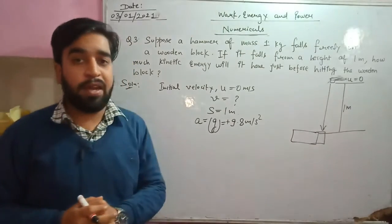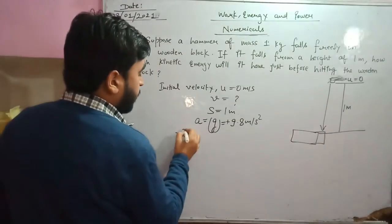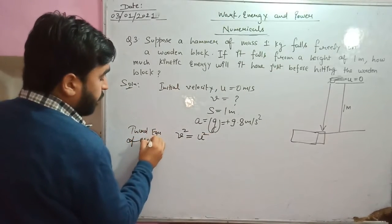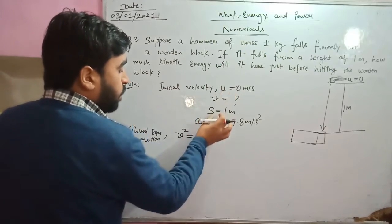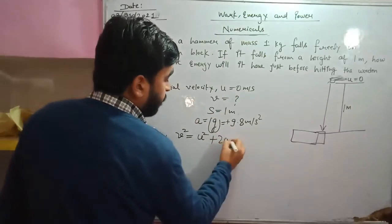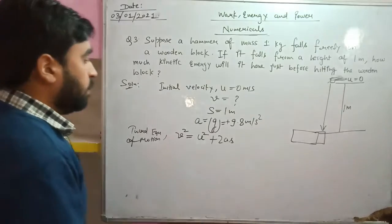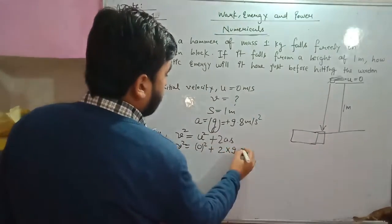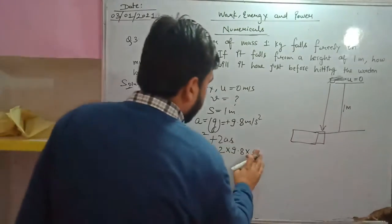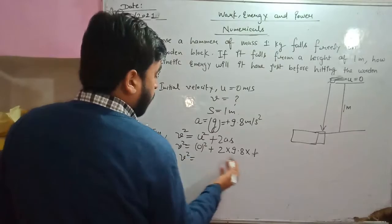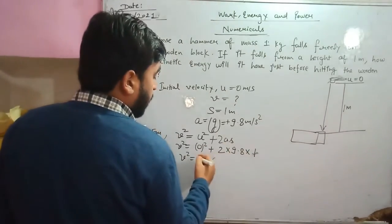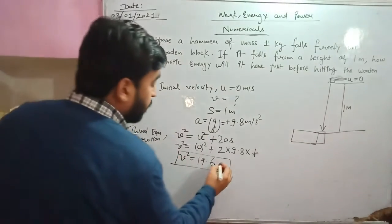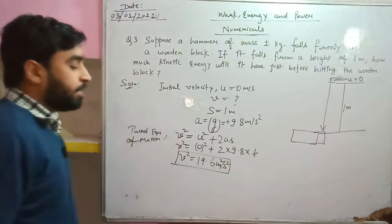The third equation of motion is most suitable here since we have u, s, and a, and need v. So v² = u² + 2as = 0 + 2 × 9.8 × 1 = 19.6 m²/s². I haven't calculated v directly because for kinetic energy we need v², not v.